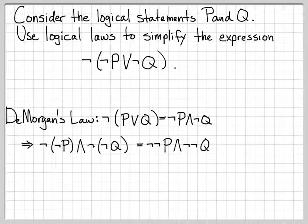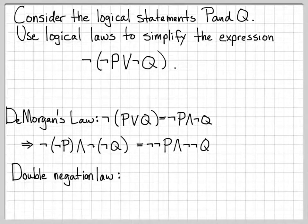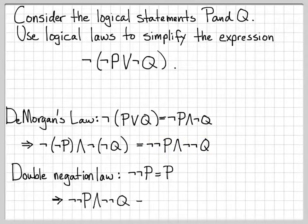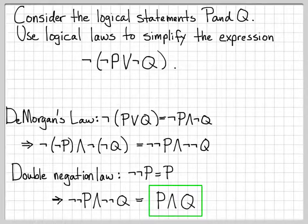The next obvious thing to do is use what we call the double negation law. The double negation law says that for any logical statement P, not not P is equal to P. We have something like that in both terms here, so we can apply that twice — writing not not P and not not Q.